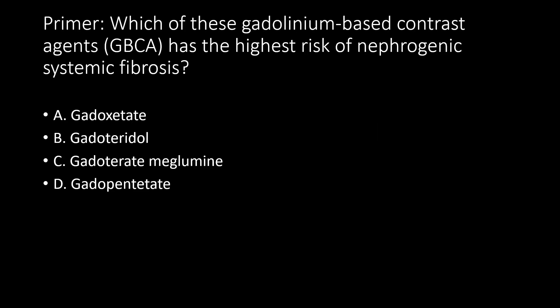Here's a primer question: which of these gadolinium-based contrast agents, or GBCA, has the highest risk of nephrogenic systemic fibrosis? The answer is gadopentate. And after you memorize this mnemonic, you'll be able to answer that no problem.